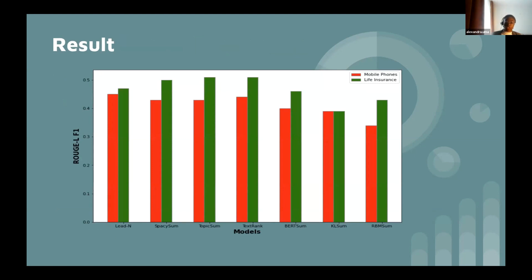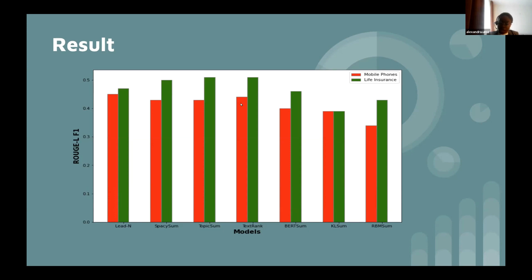The results show that the best models for this task are TextRank and TopicSum — unsurprisingly, as TextRank has been shown in literature to be quite competitive. Lead-N, though very simple, is also competitive. It's because picking the first few sentences of the call document tends to always capture the reason for the call, which the gold summary always wants to capture. TopicSum and BERTSum are also competitive with TextRank. Surprisingly, Lead-N outperformed even TextRank for the mobile phone domain.